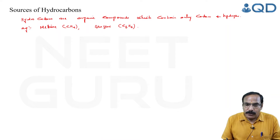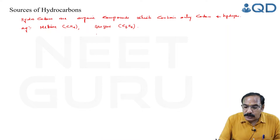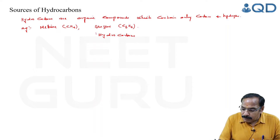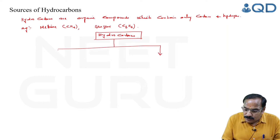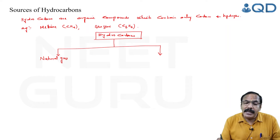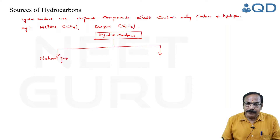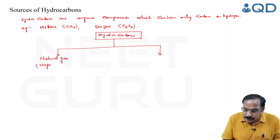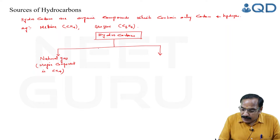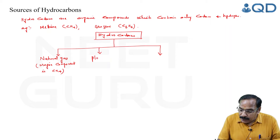Now, what are the important sources of these hydrocarbons? The first source is natural gas. Hydrocarbons present in natural gas are formed by slow decay and decomposition of plants and animals. The major component of natural gas is methane.